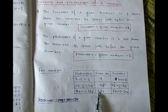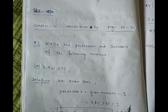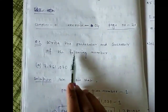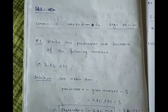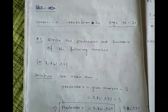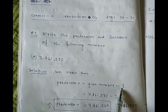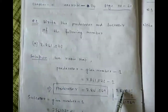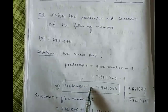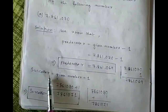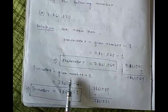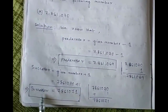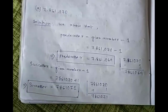Now we will solve Question 1 from Exercise 4: write the predecessor and successor of the following number. Predecessor = given number − 1, so after subtracting we get the predecessor. Successor = given number + 1, so after adding we get the successor of the given number.